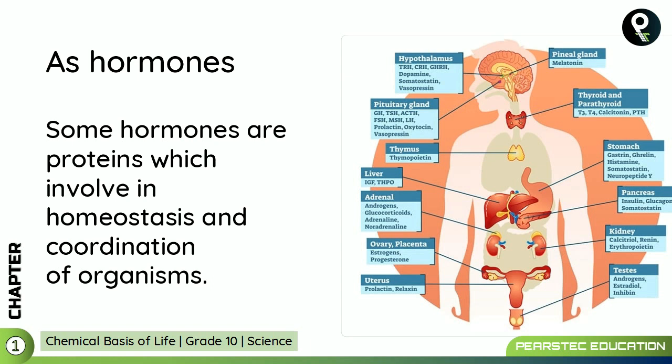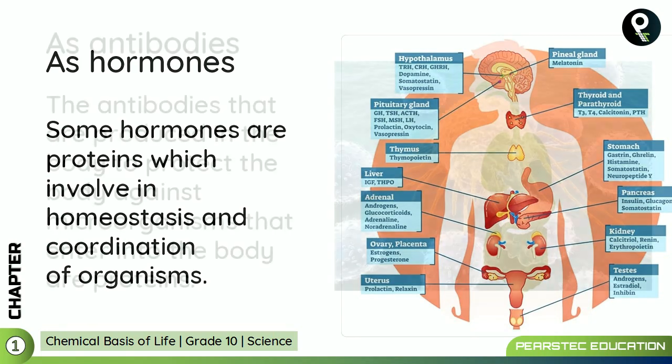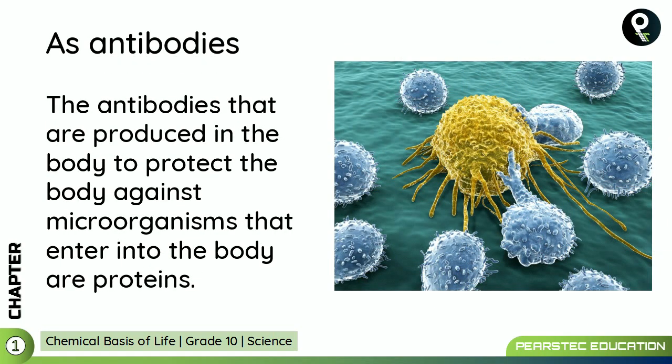Proteins also work as hormones. Some hormones are proteins that are involved in homeostasis and coordination of the organism. This picture in front of you shows that out of all the hormones in your body, some are proteins which involve in homeostasis and coordination of the organism.